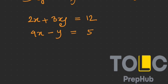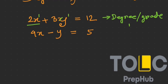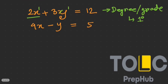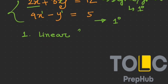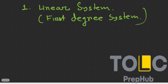As we already learned in previous tutorials about degree, for the first term of the first equation the power of variable x is 1, and for the second term the power of variable y is also 1, so the degree of the equation is 1. The second equation also has degree 1 for both variables. If a system consists only of such equations, we call it a linear or first degree system.